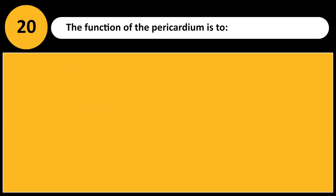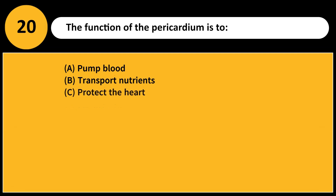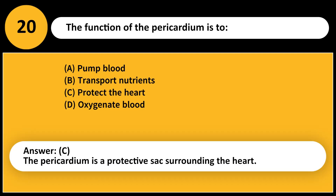The function of the pericardium is to: A. Pump blood. B. Transport nutrients. C. Protect the heart. D. Oxygenate blood. Answer: C. The pericardium is a protective sac surrounding the heart.